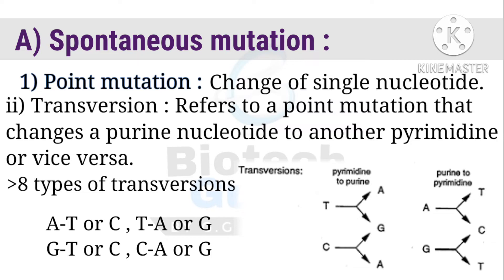In frameshift mutation, deletion and insertion of bases results in translation of incorrect amino acids, producing stop codons which result in shorter or longer polypeptide chains. For example, base insertion adds glutamine causing a frameshift, while base deletion removes arginine.